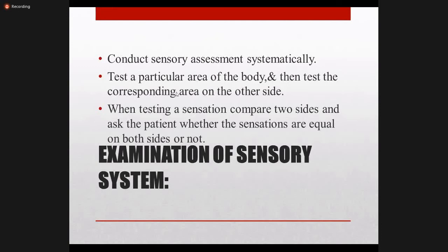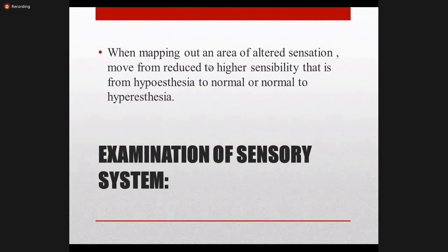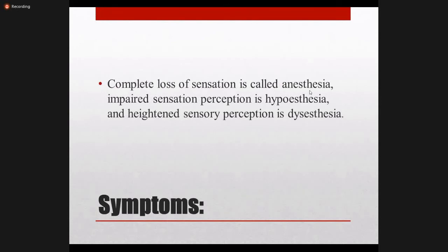Conduct sensory examination systematically: take a history to identify which area is affected and start from there. Test a particular area, then test the corresponding area on the other side. When comparing both sides, ask the patient whether sensations are equal, decreased, or increased. Sensations can be absent (anesthesia), decreased (hypoesthesia), or increased (hyperesthesia), and you should map the boundaries by moving from reduced to normal sensibility areas.